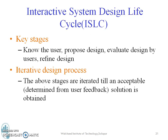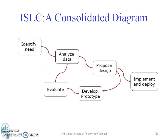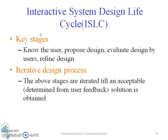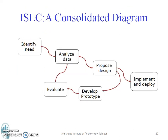Acceptable is determined from user feedback. This is a typical consolidated diagram of the interactive system design life cycle. It has: identify the need, analyze the data, propose the design, develop a prototype, and evaluate — in a loop. And then finally, implement and deploy.